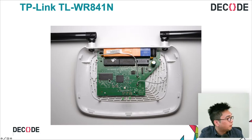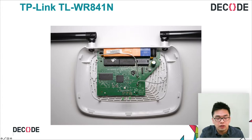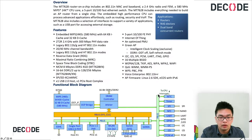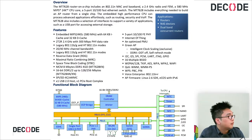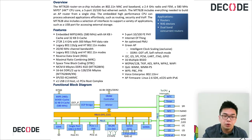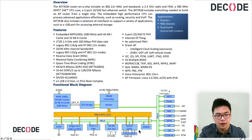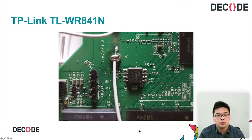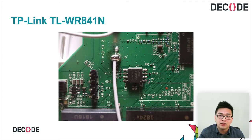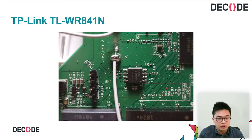The router has a MediaTek SoC, Zentel RAM to the left, and a Giga Device flash on the right. The datasheet for the MediaTek device shows it supports both JTAG and UART and various other protocols, with a functional block diagram at the bottom. On this device, the PCB designer has nicely labeled the UART interface, so we just need to solder some jumper headers onto it to start interacting with the UART interface and get a shell prompt.